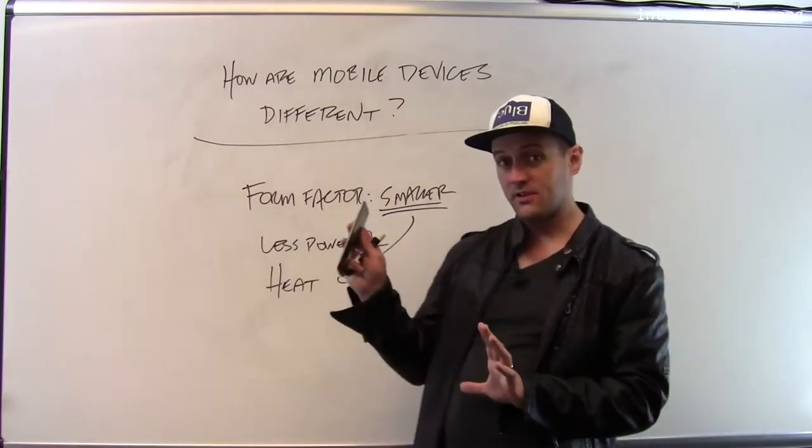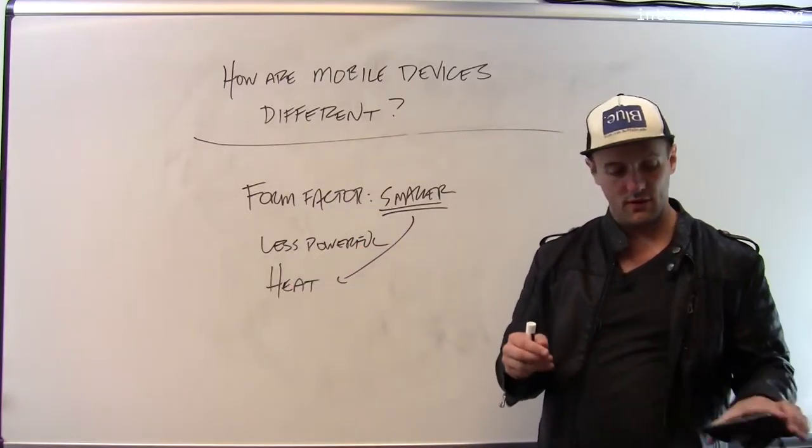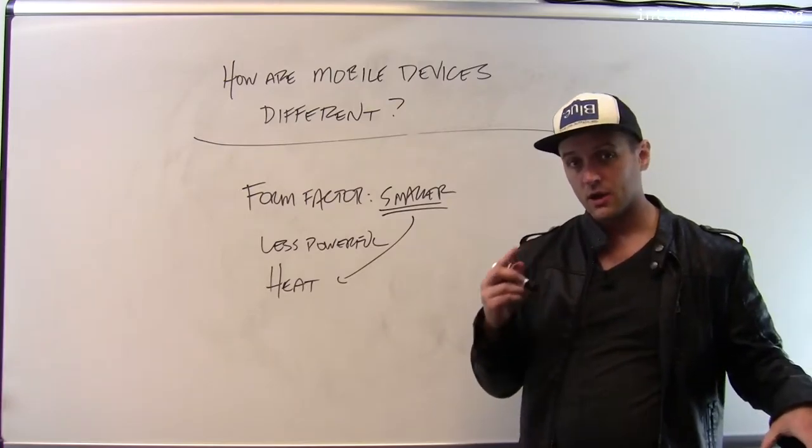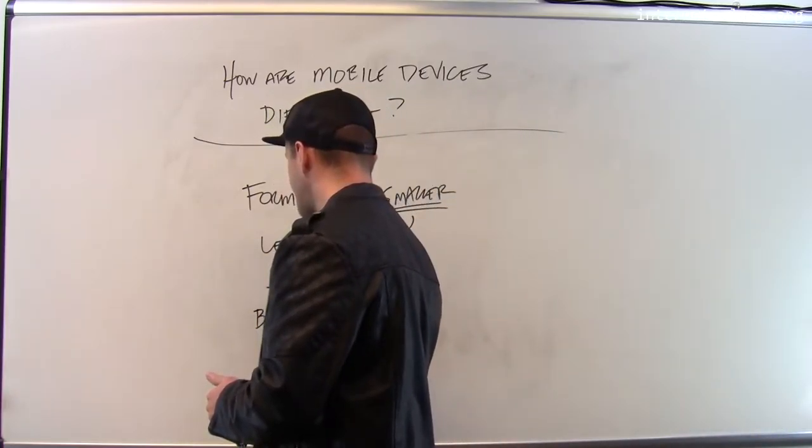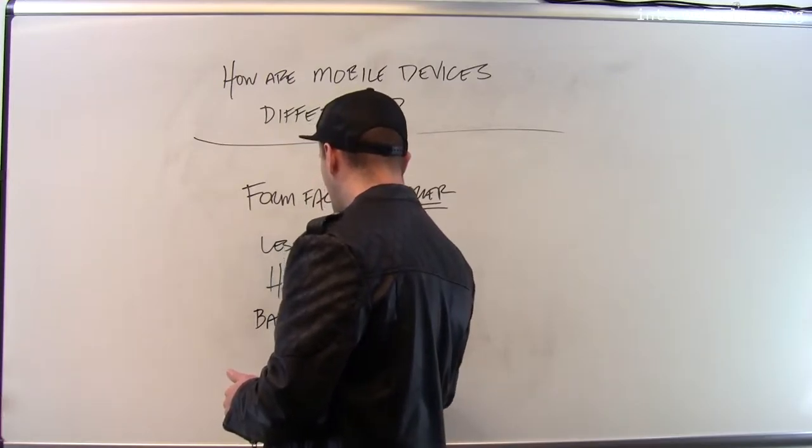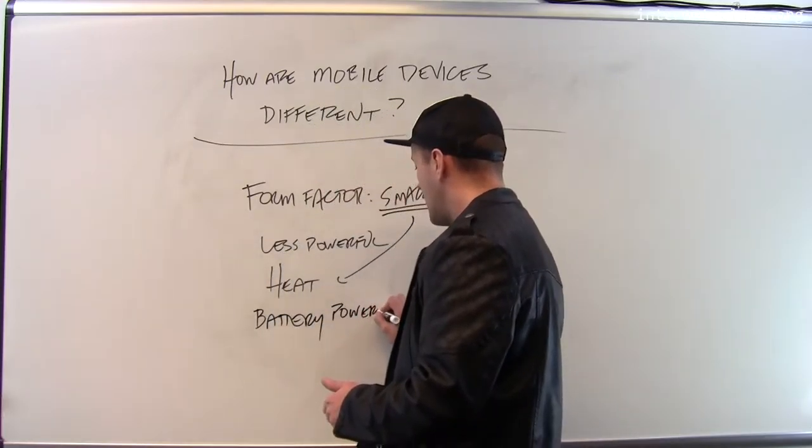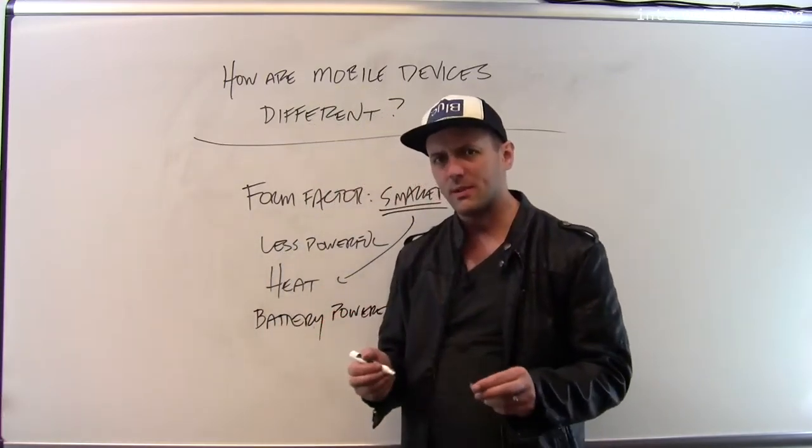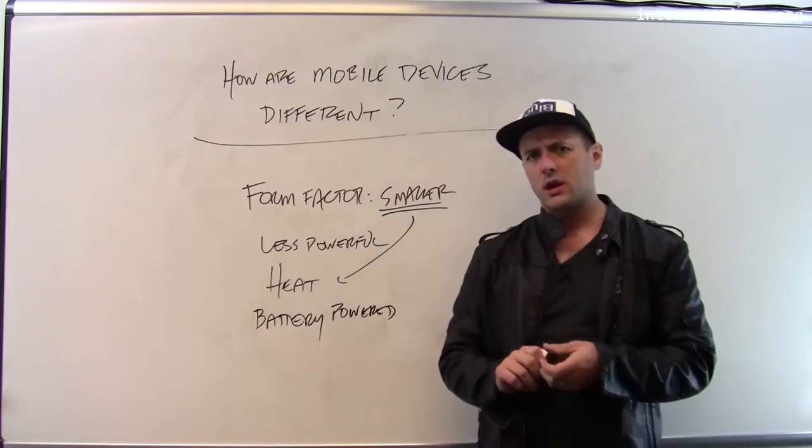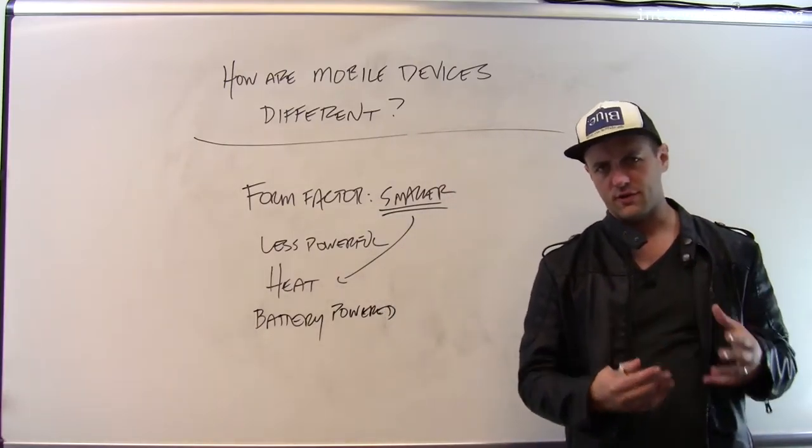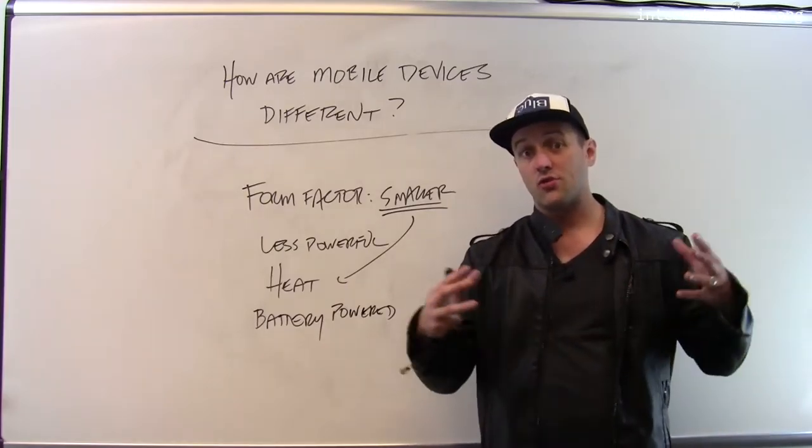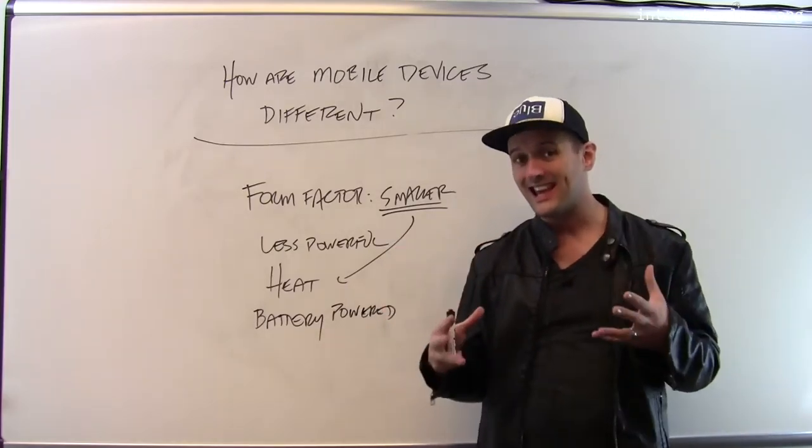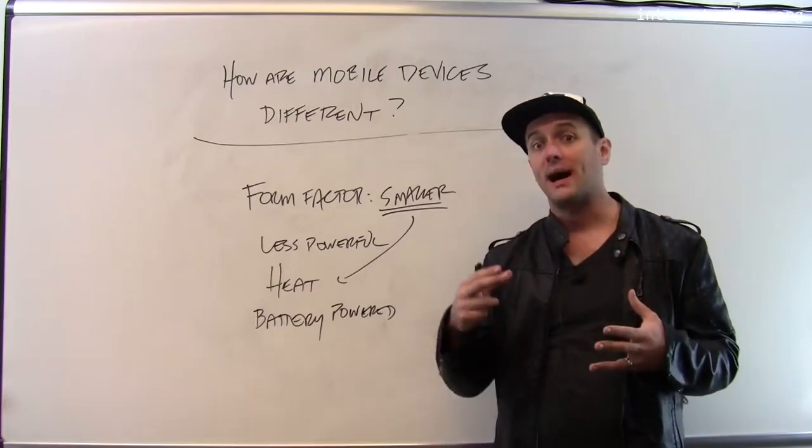So other differences between this and other devices - the smallness also creates energy constraints. These devices are battery powered. And because they're so much smaller than laptop computers, you might say my laptop computer is battery powered too. Why is it so much more of a challenge for a smartphone?